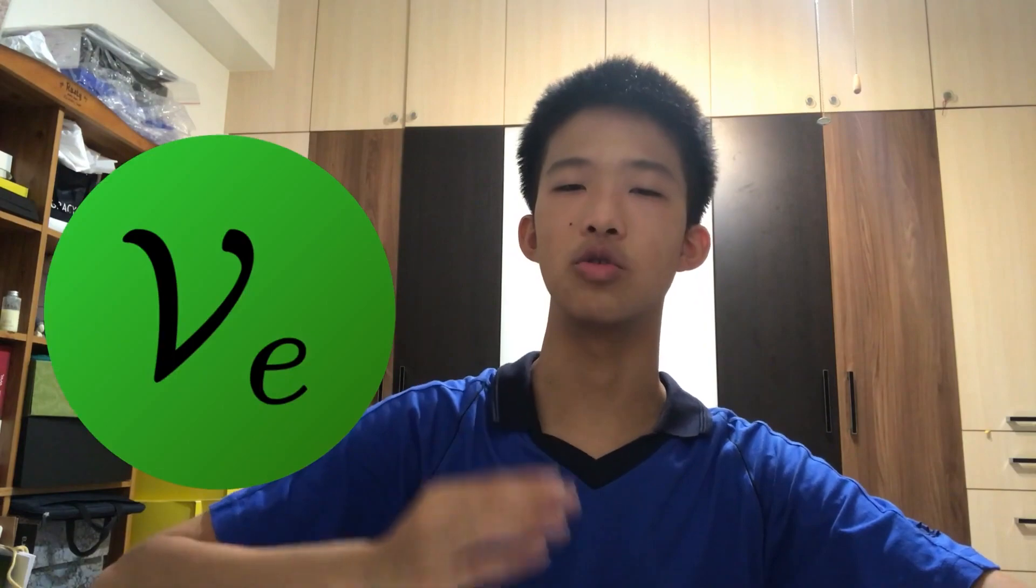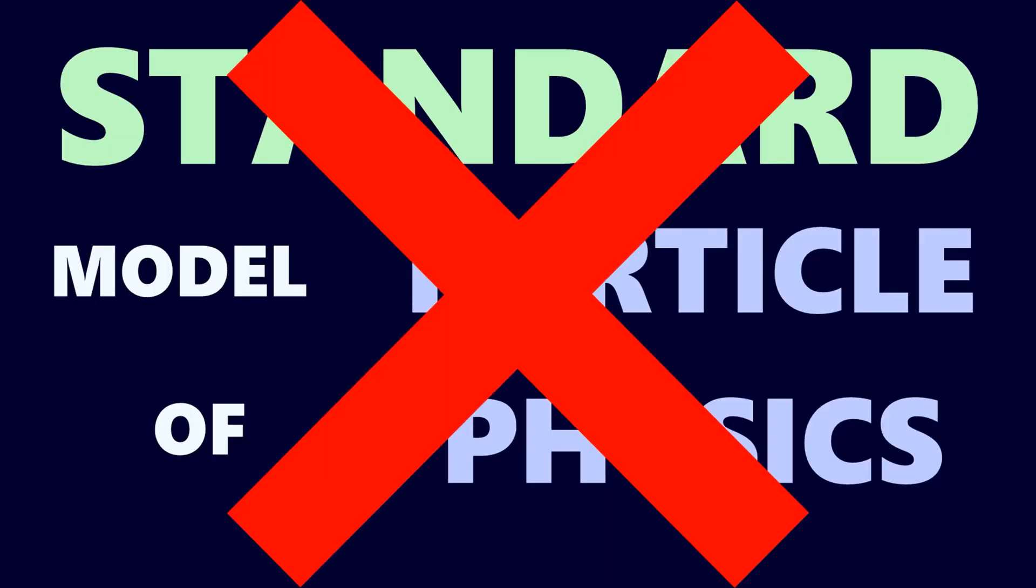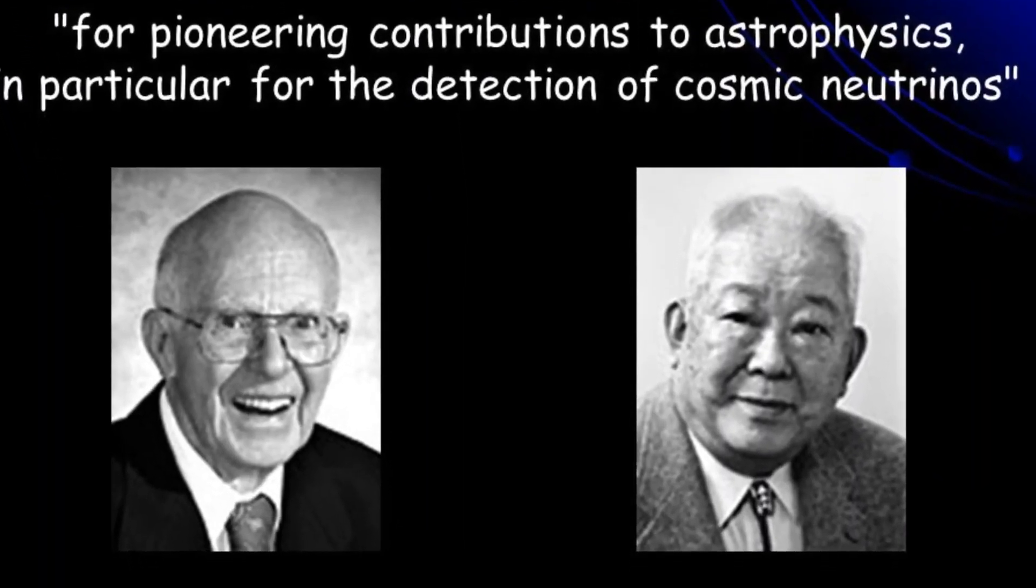What's interesting is that this conversion can only happen if neutrinos have mass, which means that the old theory is wrong. This discovery gave us a chance to understand neutrinos better.